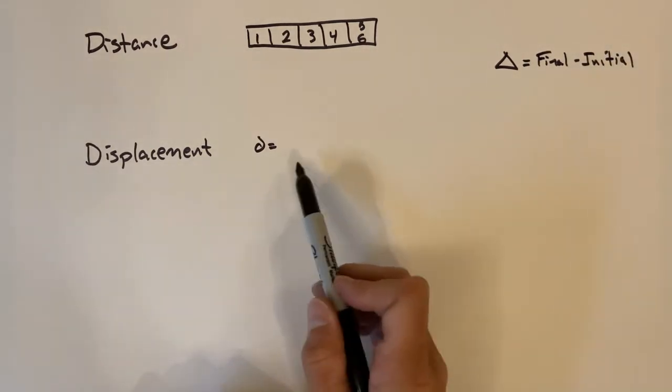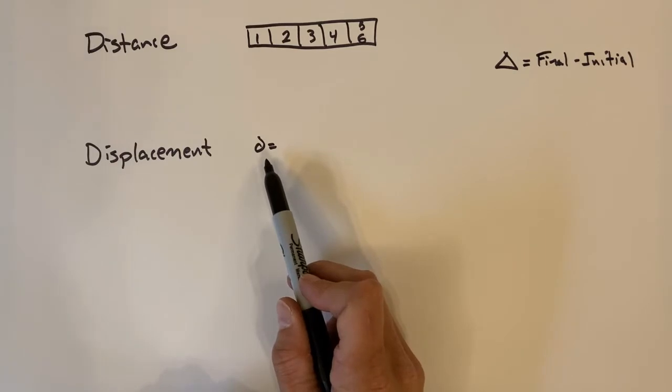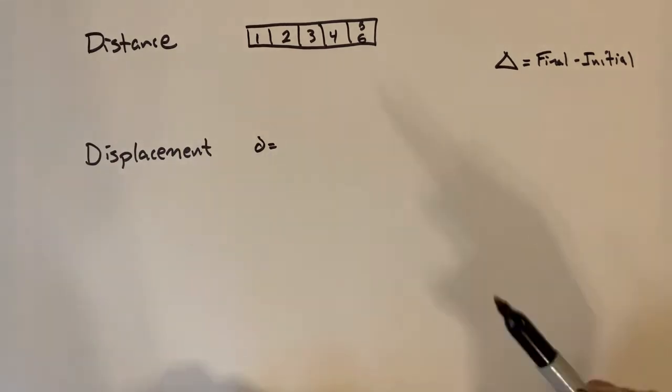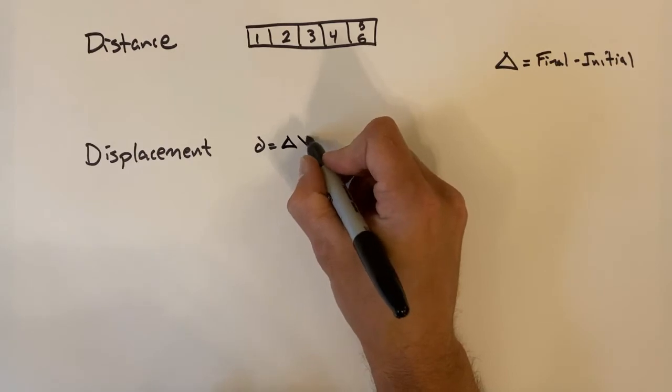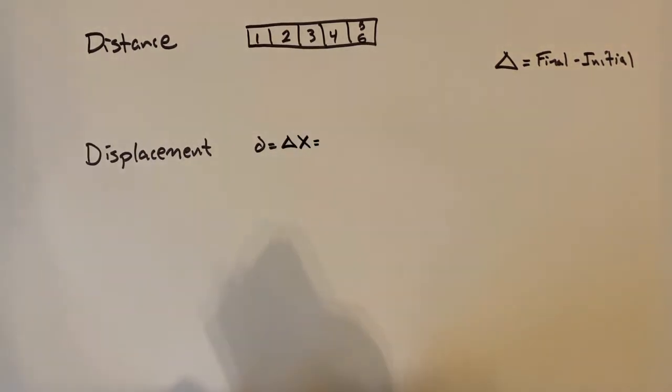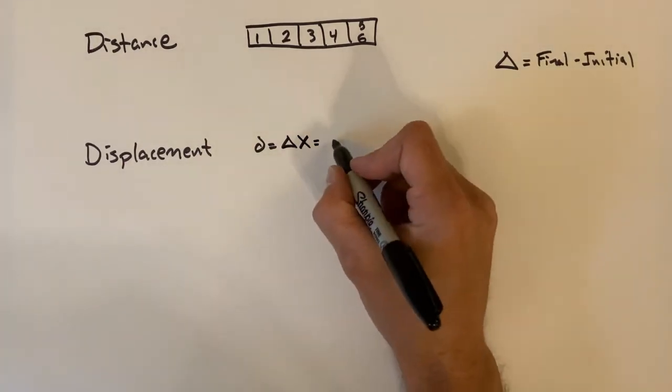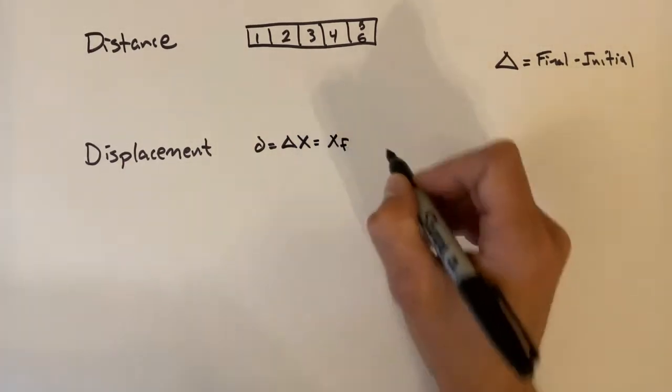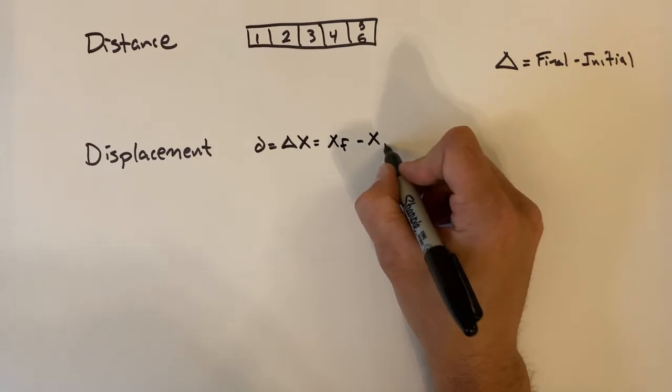So when we're talking about displacement, our displacement is going to be the change in position. Let's talk about things in the x-axis. So we have a change in position. So what that means is we're going to be worried about the final position minus the initial position.